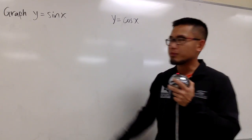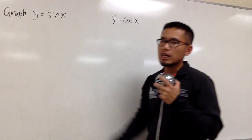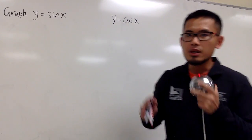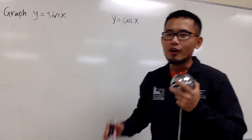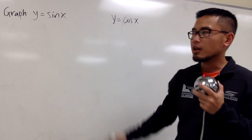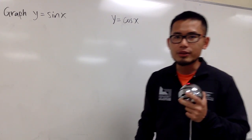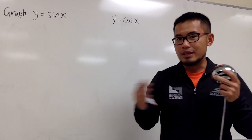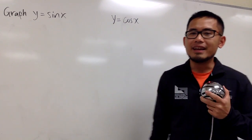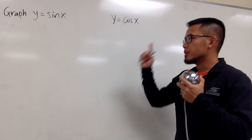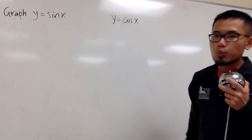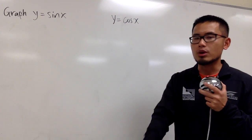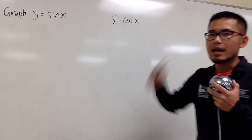In this video, I'll show you how to graph y equals sin x, and we'll also do y equals cos x. This is just going to be a quick overview of the graphs for sine and cosine. You have to know that sine and cosine both look like waves, and they are called periodic functions. I'll show you what we need to graph one period for both.